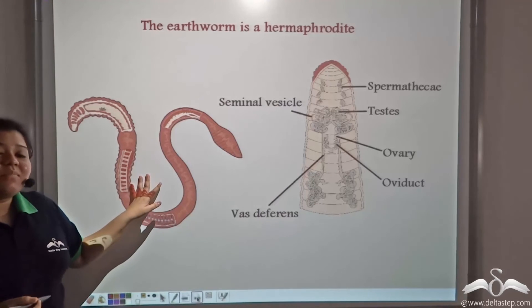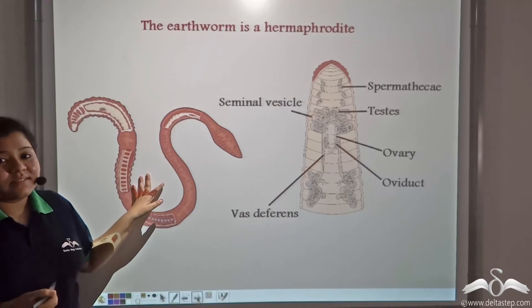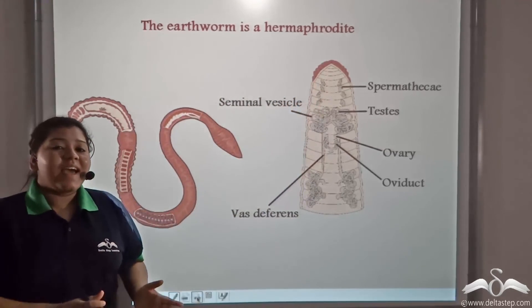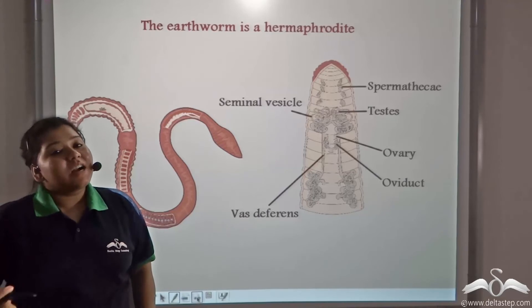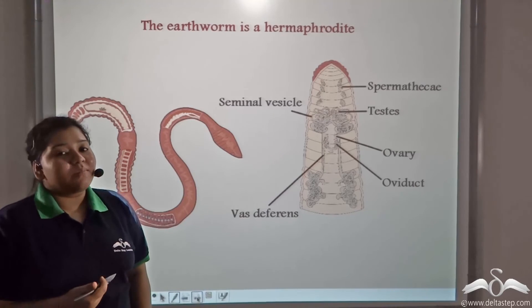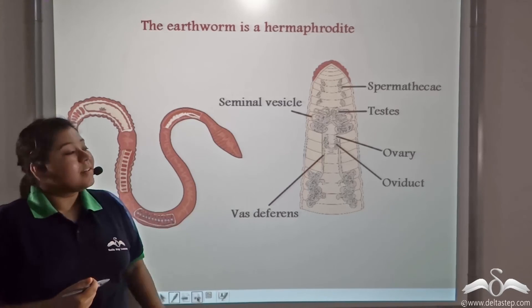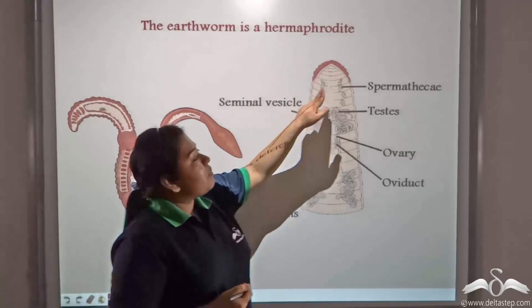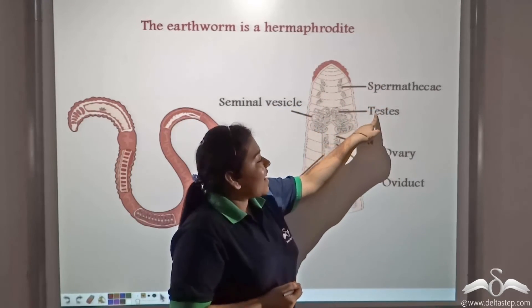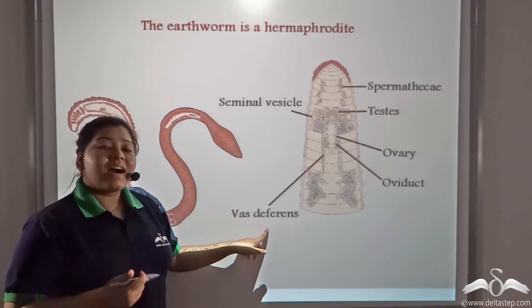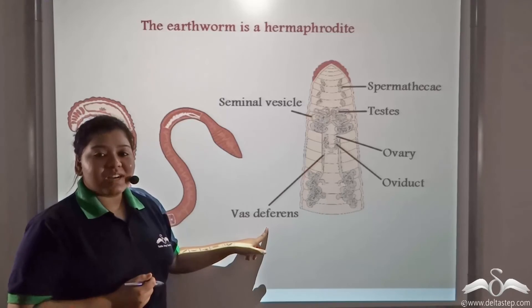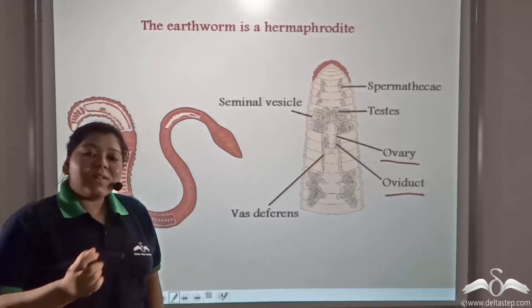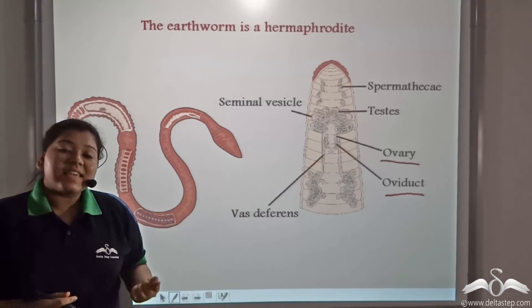Did you know that the earthworm is a hermaphrodite? Both the female and the male reproductive parts are present in the same worm. Male reproductive organs such as seminal vesicles, spermathecae, testes, and vas deferens are present along with female reproductive parts such as ovary and oviduct — all these parts are present in a single worm.